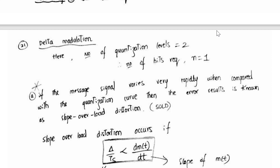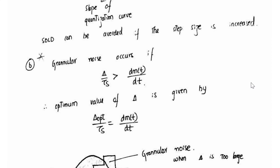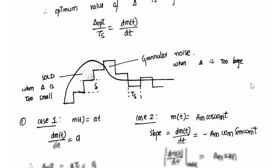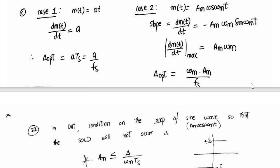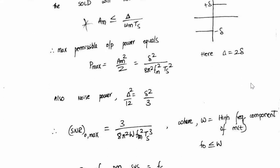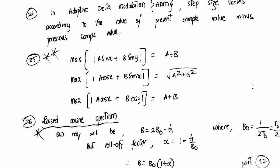So delta modulation - this is pretty much important. There were many questions such as slope overload distortion in the previous year question papers, even for granular noise as well. Some of the important formulas I have captured here.